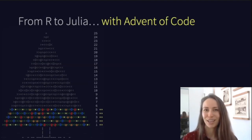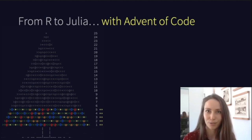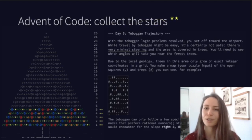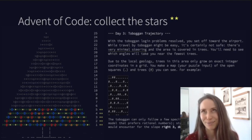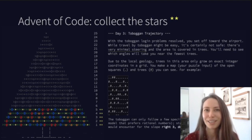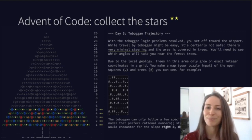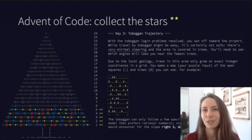Advent of Code is a free annual online programming event featuring daily puzzles every December 1st to 25th. The puzzles are loosely Santa or North Pole themed. For example, for this puzzle, you had to count how many trees you'd collide into while tobogganing down a slope — a matrix traversal problem. Each puzzle has two parts; the second part is revealed once you've completed the first and usually builds on what you've implemented in some new way.